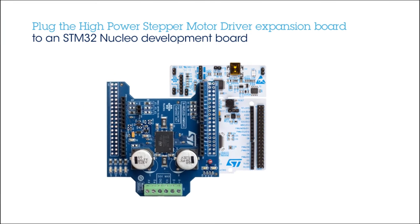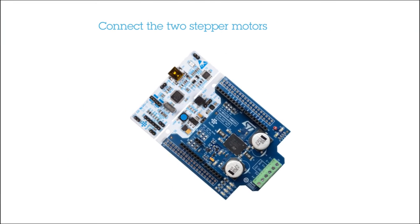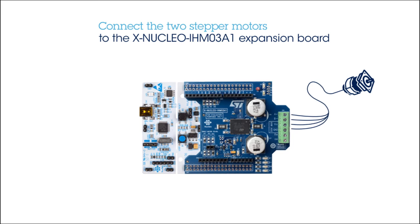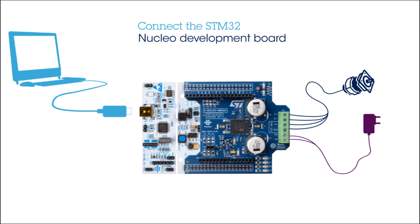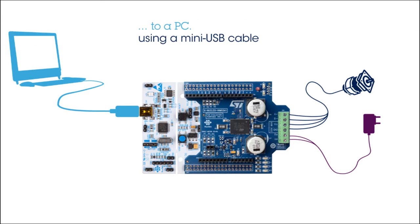First, connect the high-voltage stepper motor to the expansion board. Then connect a voltage supply — in this case, we use a 12-volt supply. Then connect the STM32 Nucleo board to a PC using a mini-USB cable, and then you are ready to power on!